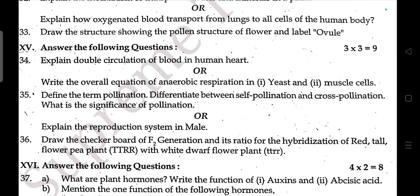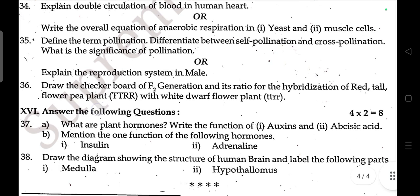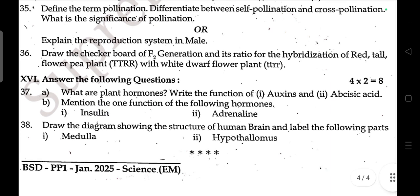Explain the double circulation of blood in the human heart, or write the overall equation of anaerobic respiration in yeast and muscle cells. Define pollination, differentiate between self-pollination and cross-pollination, state the significance of pollination, and explain the male reproductive system.